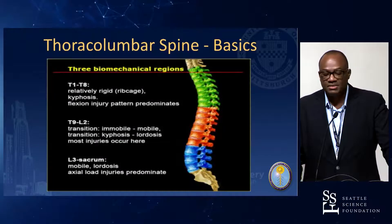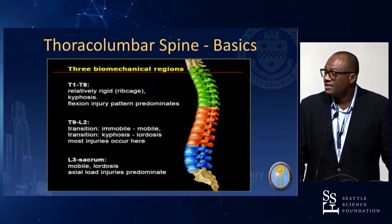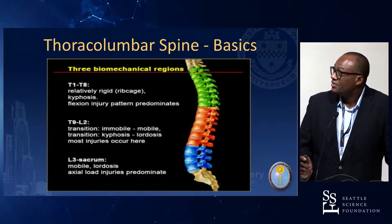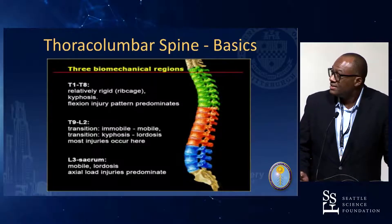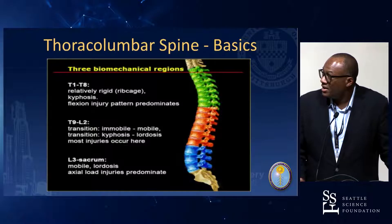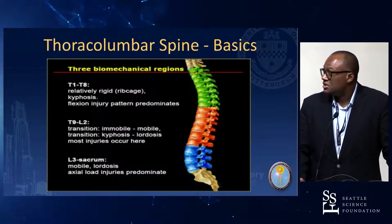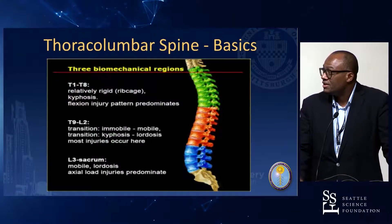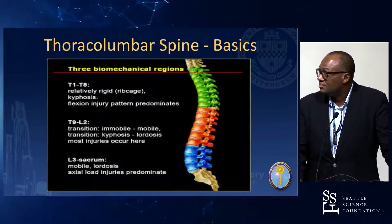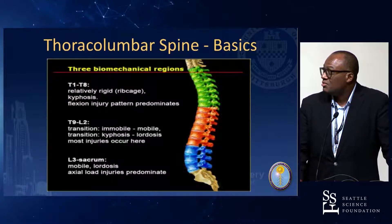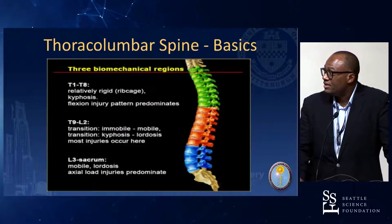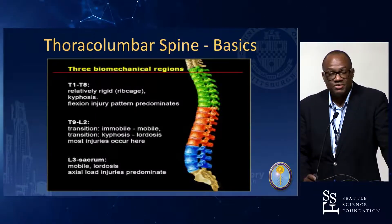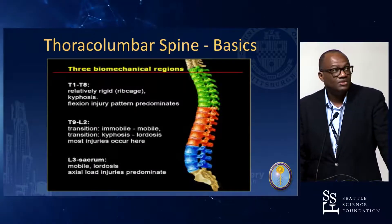Some of the basics that everybody knows: why is the thoracolumbar junction the most common area? Because it's a transition area from a mobile spine to an immobile spine, and also there's a transition from kyphosis to lordosis.